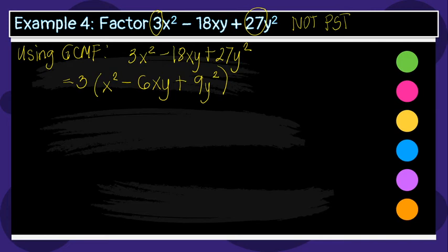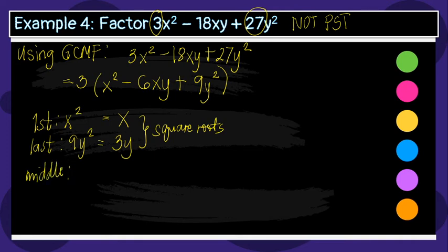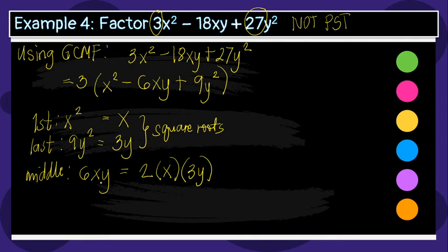Now let's check if x squared minus 6xy plus 9y squared is a perfect square trinomial. The first term is x squared and the last term is 9y squared. The square root of x squared is x, and the square root of 9y squared is 3y. For the middle term, 6xy — we compute 2 times x times 3y, which equals 6xy. The condition is satisfied.